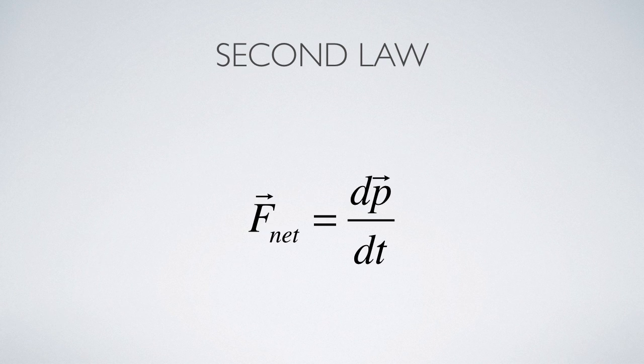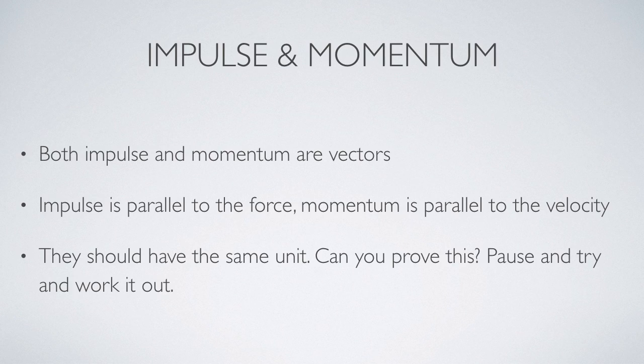In the language of calculus, this is what Newton's second law looks like: F net is equal to dp/dt. This is actually the way that it is written out in Newton's physics books. He didn't really talk about acceleration. That came later when other people started using his discoveries. This version of Newton's second law is often referred to as the momentum principle: a net force is required to change the momentum of an object. So summarizing, impulse and momentum are vectors. Impulse is parallel to the net force. Momentum is parallel to velocity.